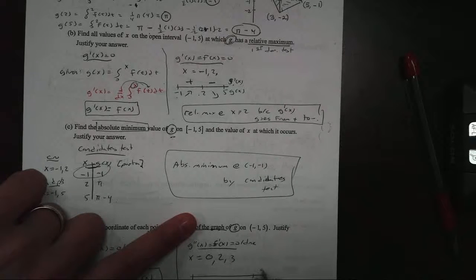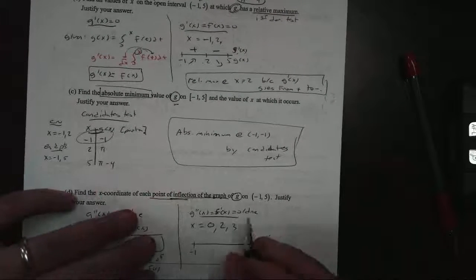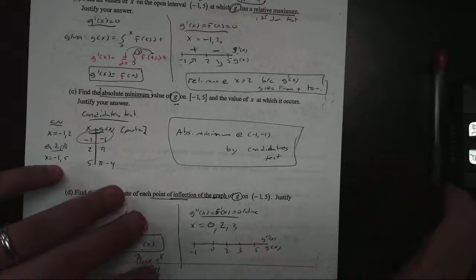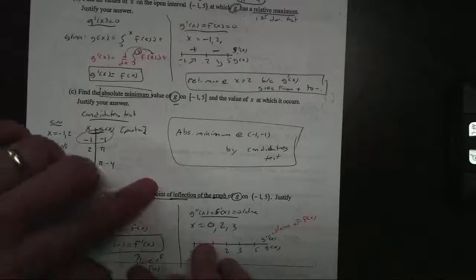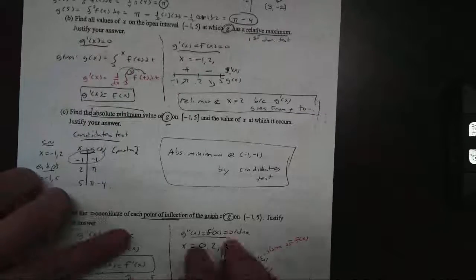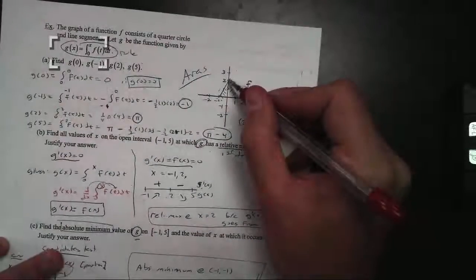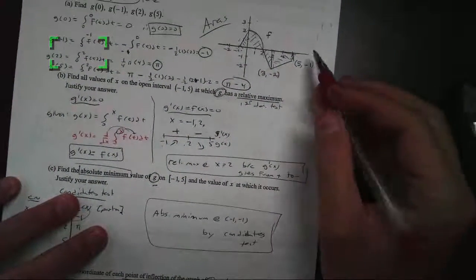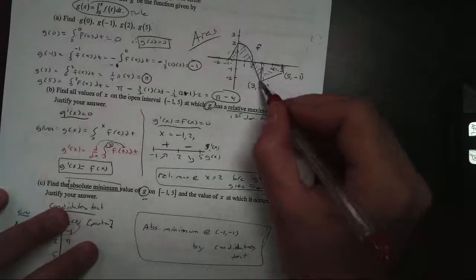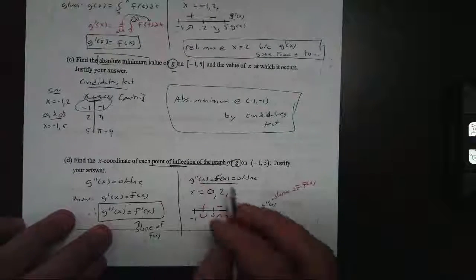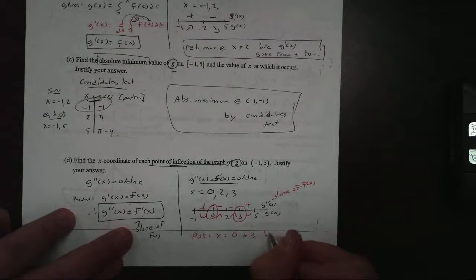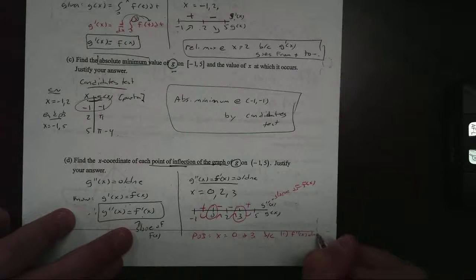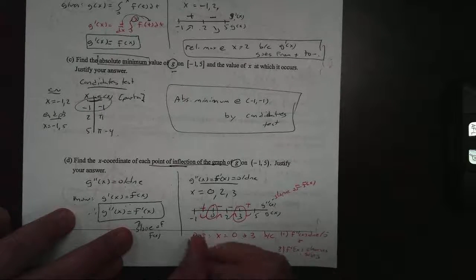So I do my sign test on the interval negative 1 to 5, with values at 0, 2, and 3. Looking at the slope of f of x: between negative 1 and 0 the slope is positive — concave up. Between 0 and 2 it's negative — concave down. Between 2 and 3, negative — concave down. Between 3 and 5, positive — concave up. Points of inflection occur at x equals 0 and x equals 3, because the second derivative does not exist or equals 0, and the second derivative changes signs.